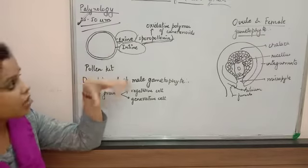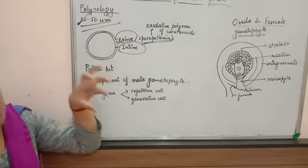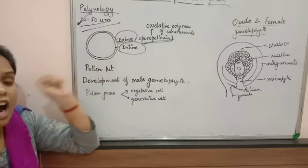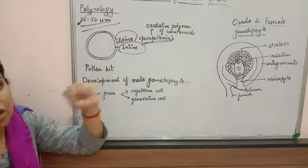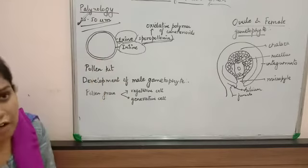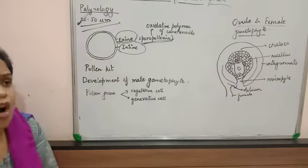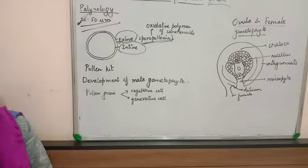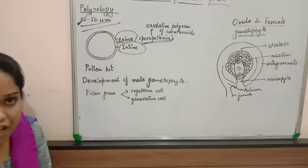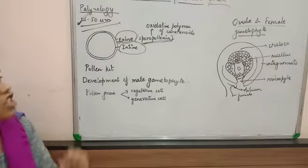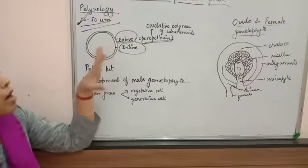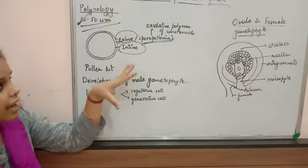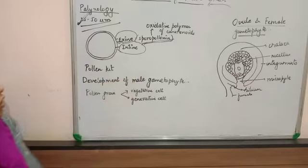Sporopollenin protects pollen grains from the external environment. It can withstand very high temperatures and extremely cold conditions, protecting the pollen grains.